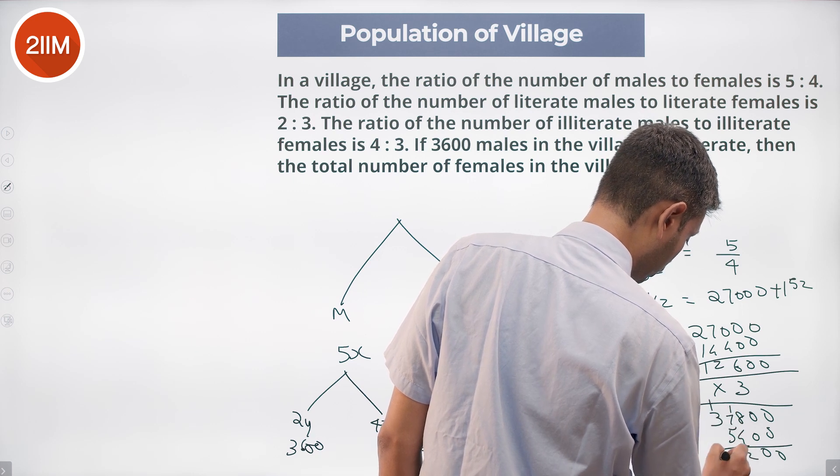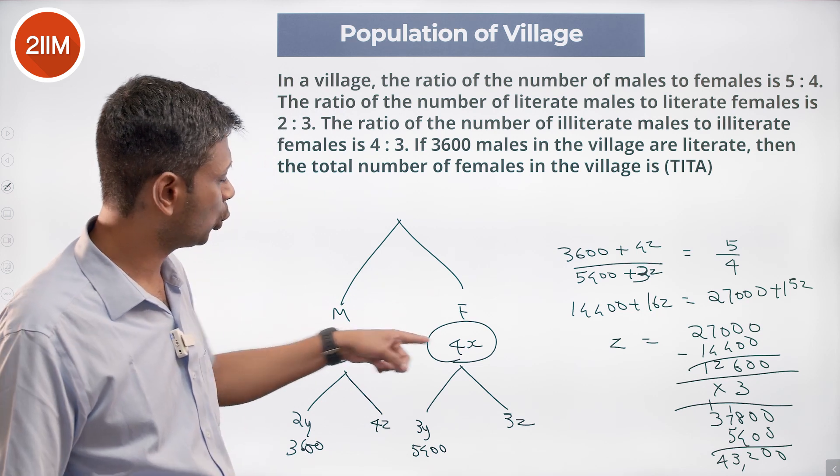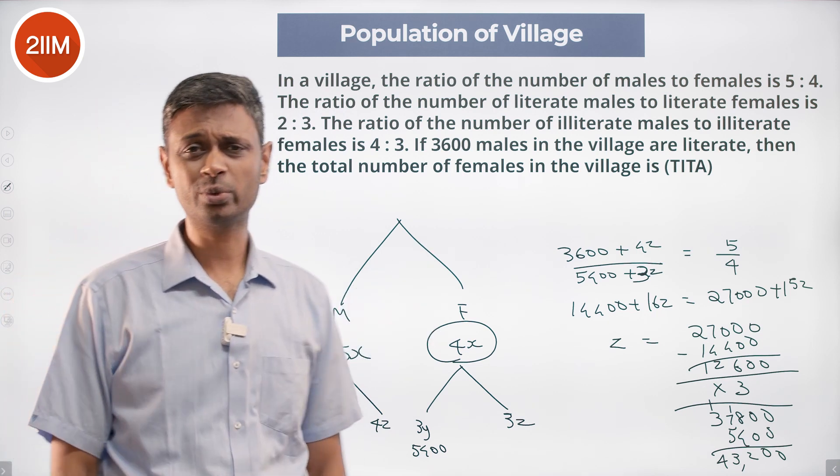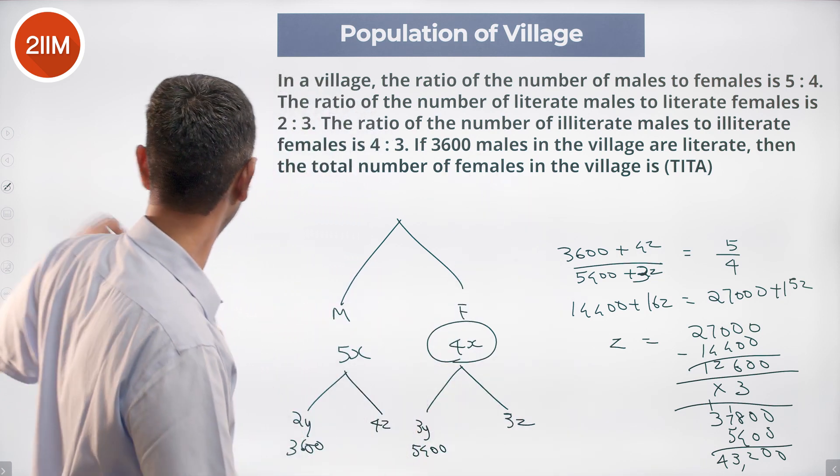43200 females are there totally in this village. Nice, beautiful ratios question. Write down the data properly and then your answer is 43200.